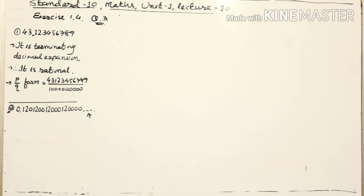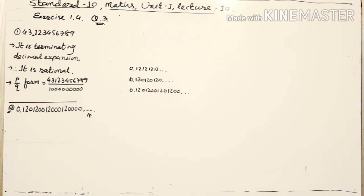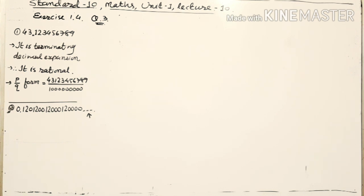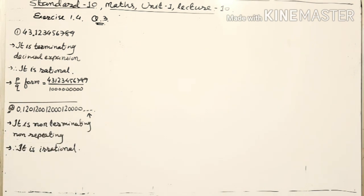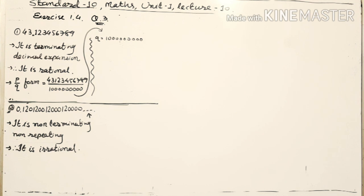It is also a non-repeating number: 120, 1200, 1200, 1200, 1240... the pattern keeps changing slightly, so it does not repeat. Since the number is non-terminating and non-repeating, it is an irrational number and cannot be written in the form of p upon q.